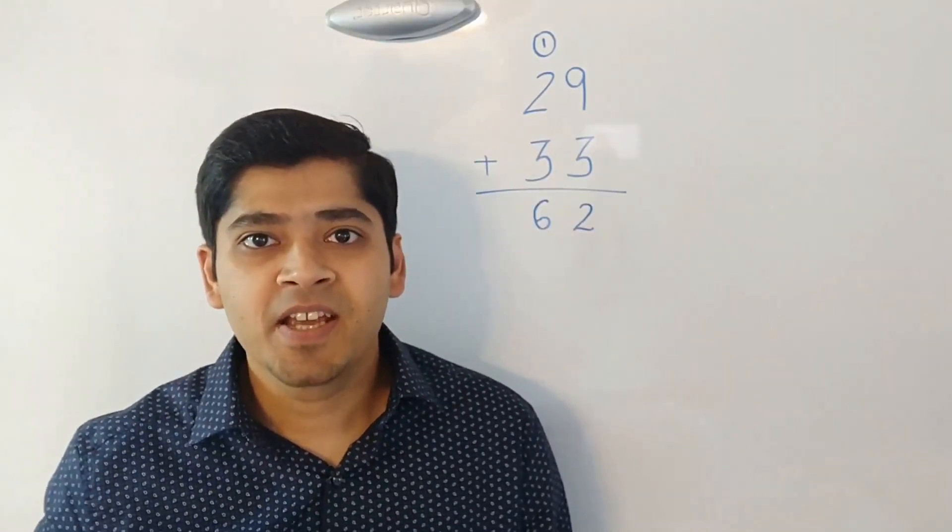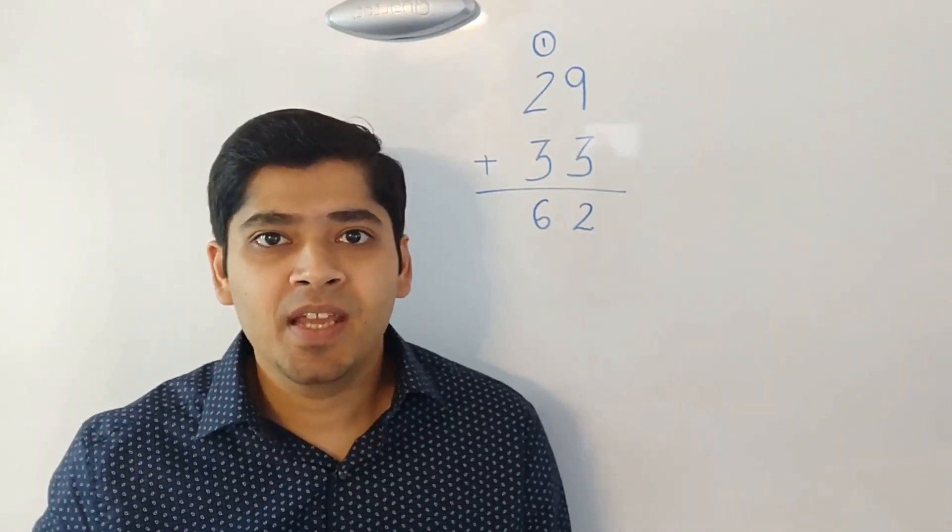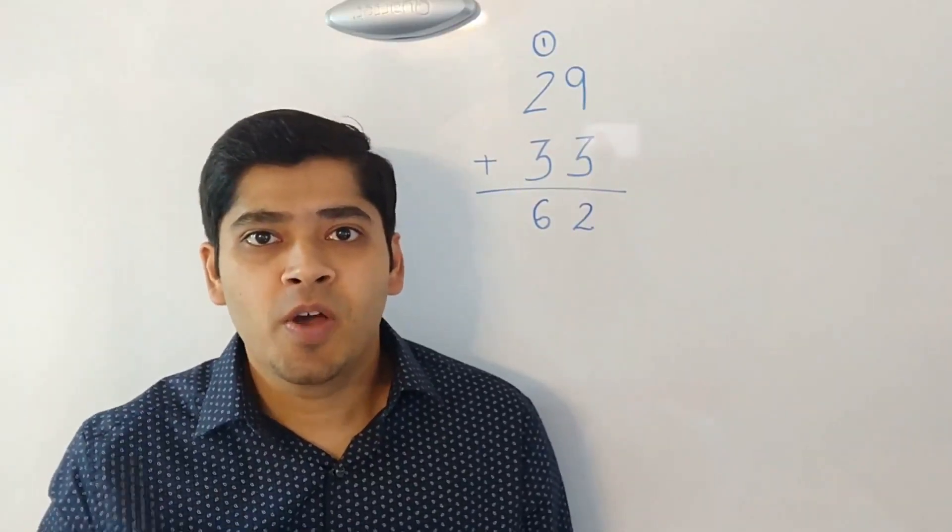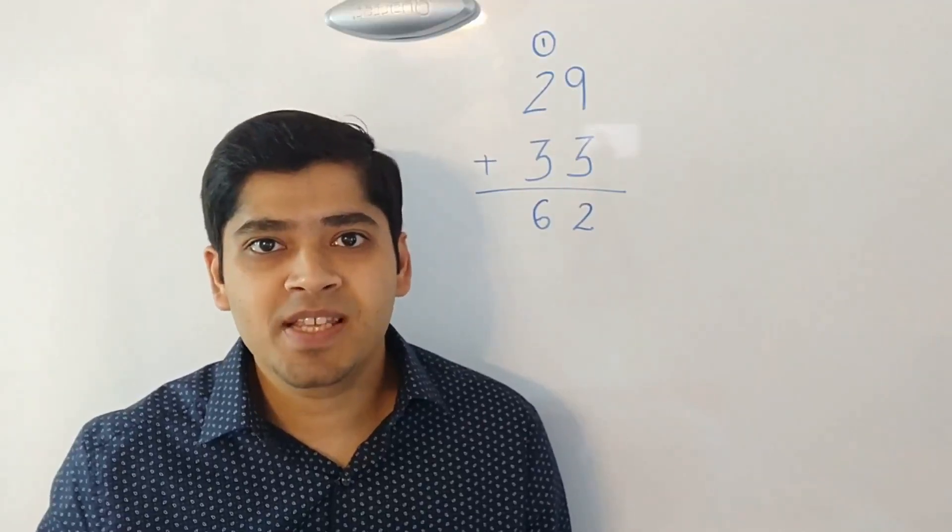Then next, we move on to the tens place. We look at 2 and 3 and then there is a carryover from the previous addition. So we sum all three of them which sum up to 6. We put 6 at the bottom.